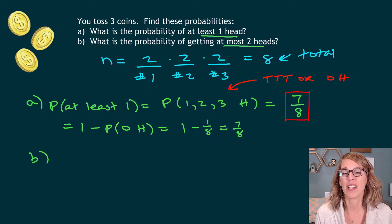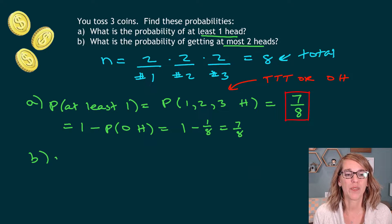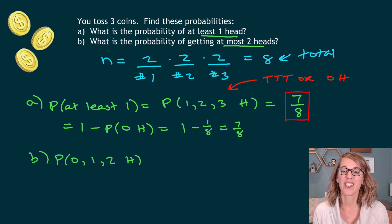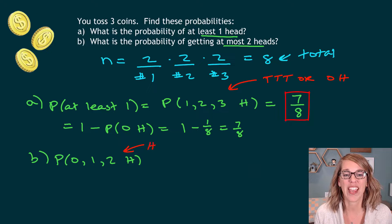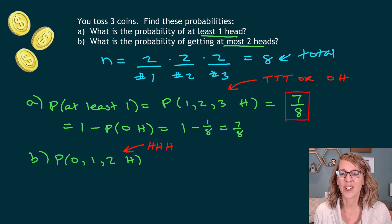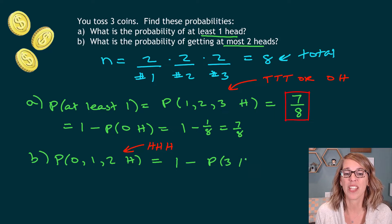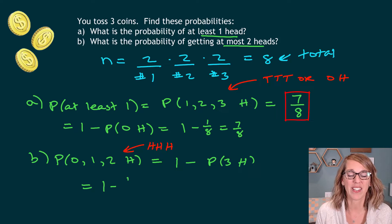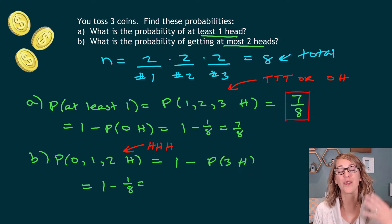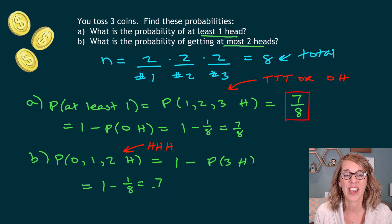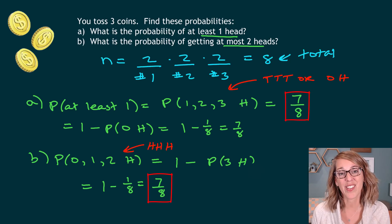In part B, I want the probability of getting at most two heads. Two is the largest allowed, so the cases are zero, one, or two heads. The only case not covered is three heads — heads, heads, heads — which is just one outcome out of eight. Using the complement: one minus one-eighth gives us seven-eighths, meaning seven favorable outcomes out of eight.